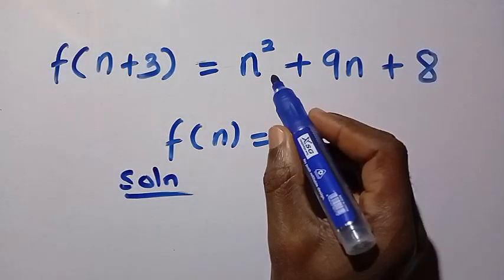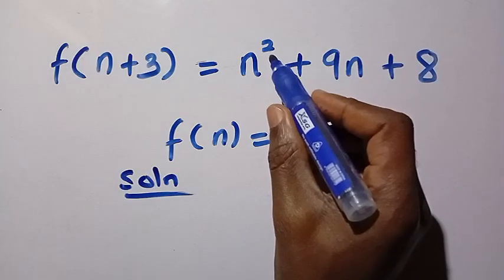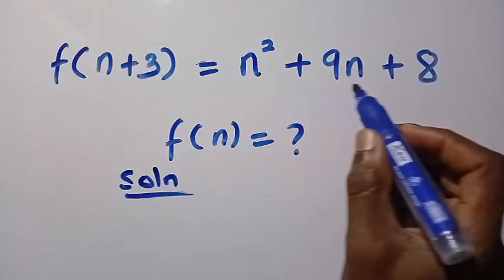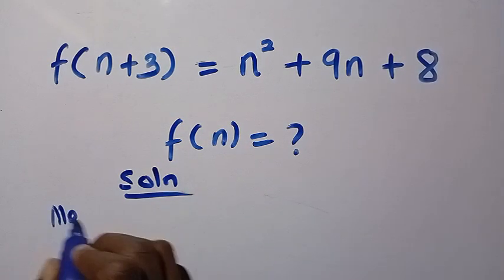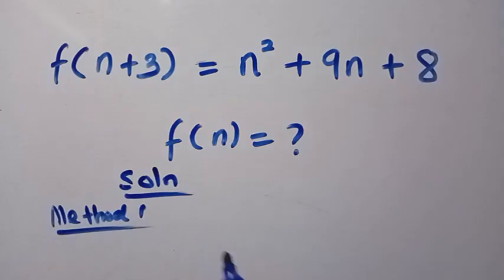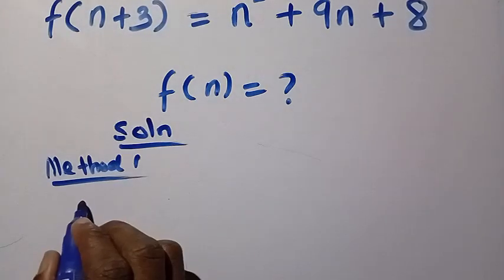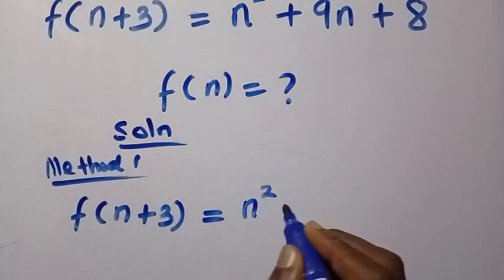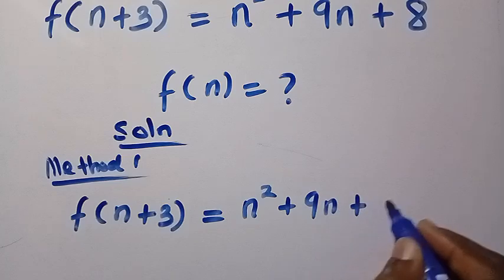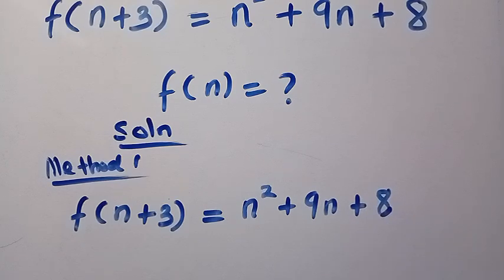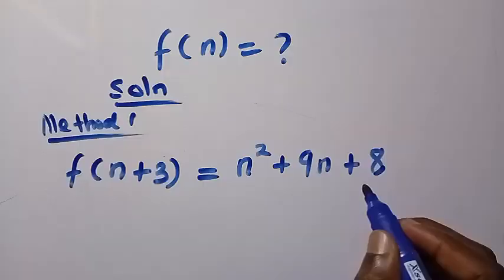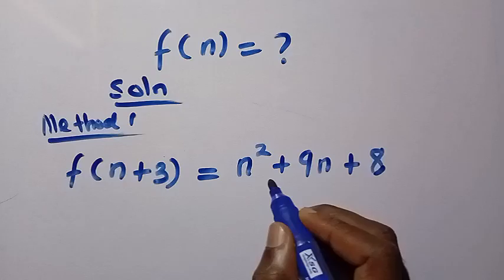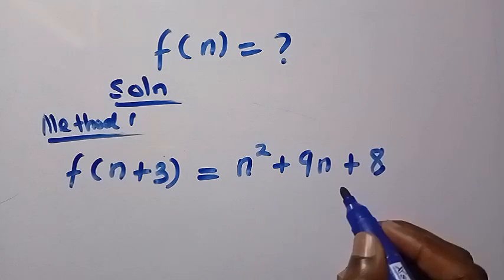At this side we have a quadratic n squared — the square indicates a quadratic — plus 9n plus 8. So the first method we are going to use here: let's see Method 1. First we write the equation as f of n plus 3 equals n squared plus 9n plus 8. Let's try and factorize this. I'm going to be showing you the best way of factorizing without guessing, and it works for any form of a quadratic equation.